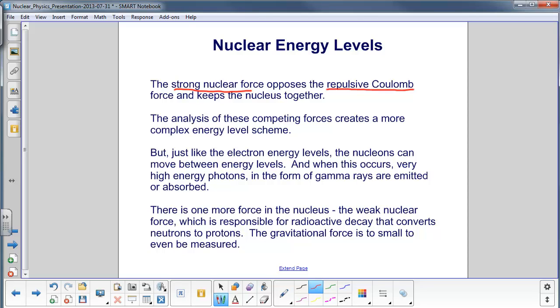However, just like the electron energy levels, the nucleons can move between these energy levels. Nucleons meaning the protons and the neutrons. And when this occurs, very high energy photons in the form of gamma rays are emitted or absorbed. This is the most energetic form of electromagnetic radiation.